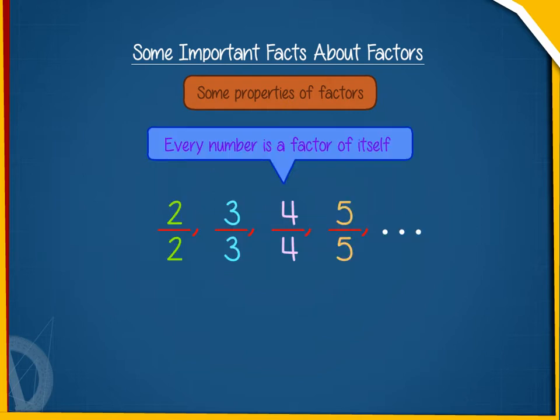The second property of factors tells that every number is a factor of itself because every number is exactly divisible by itself. For example, 10 is a factor of itself.